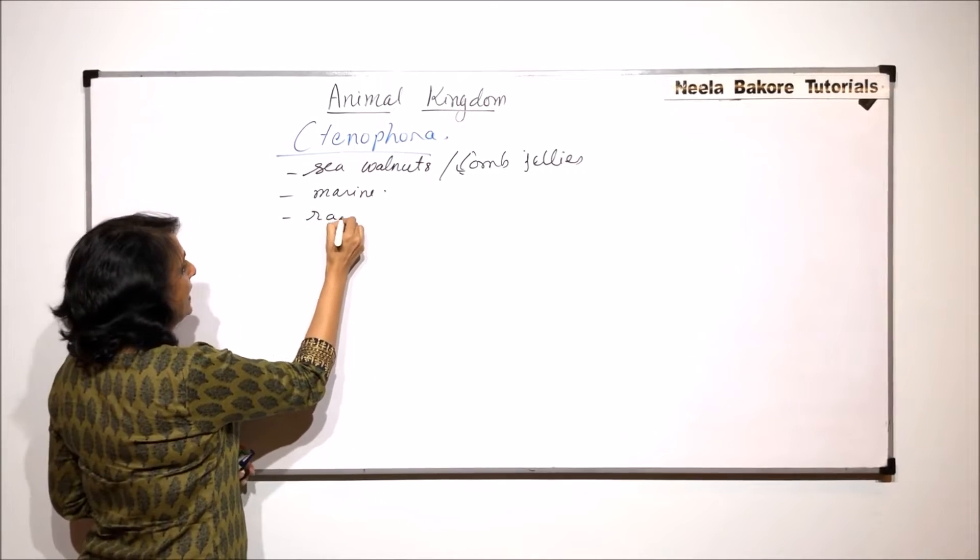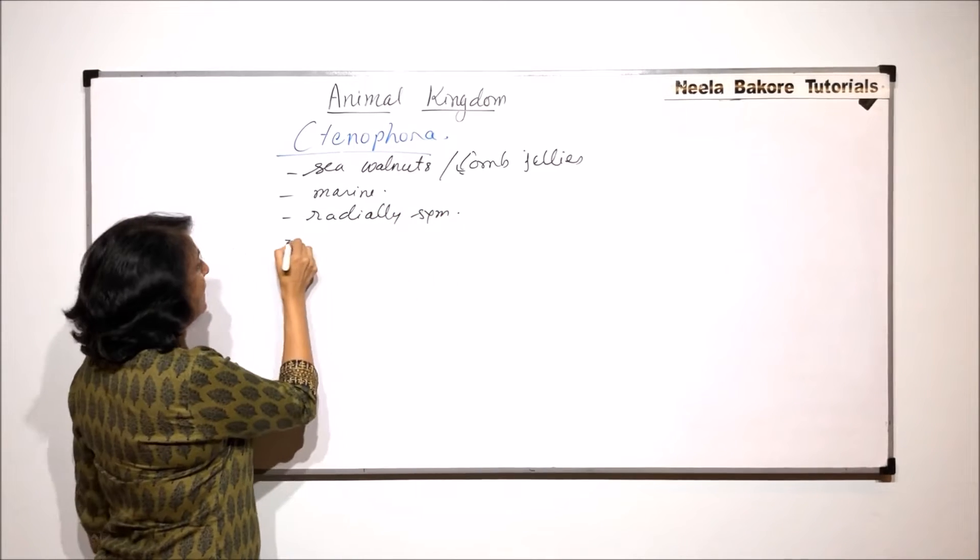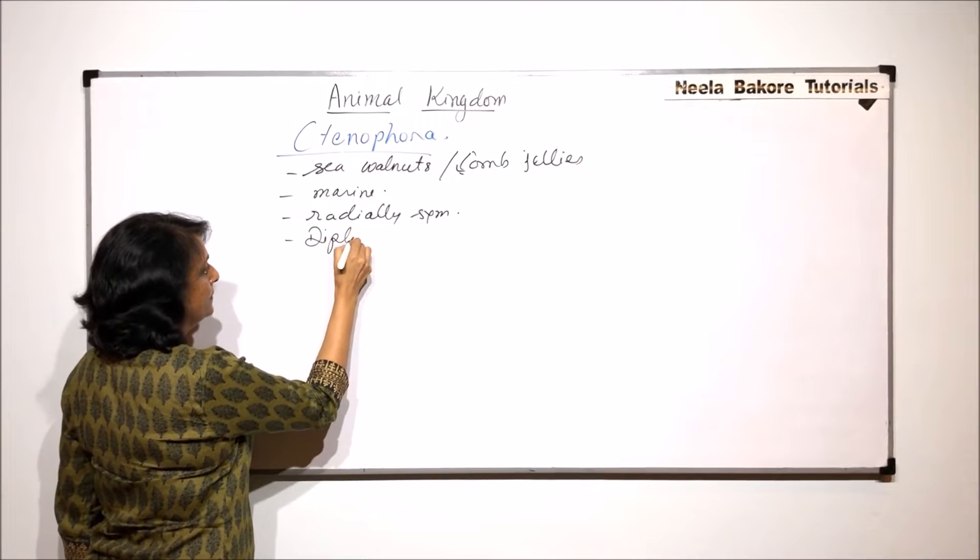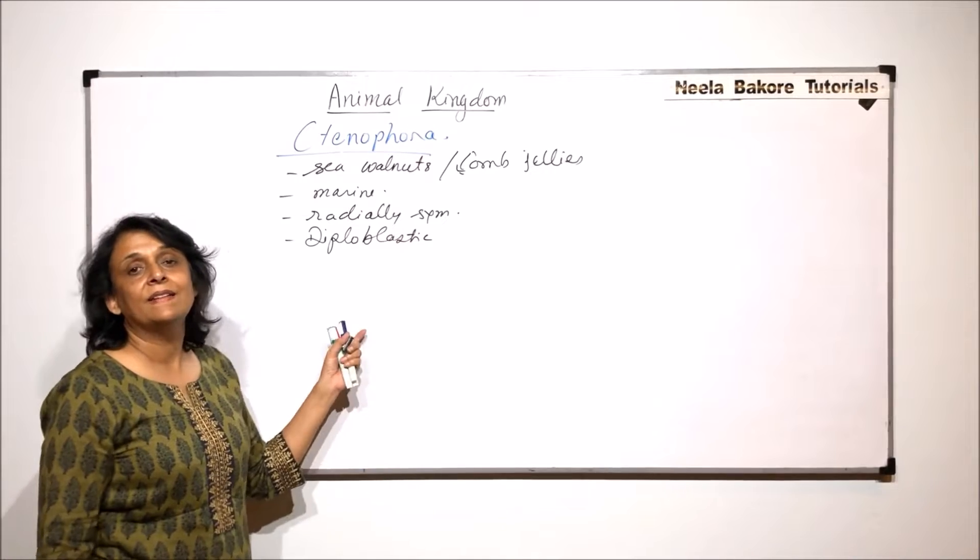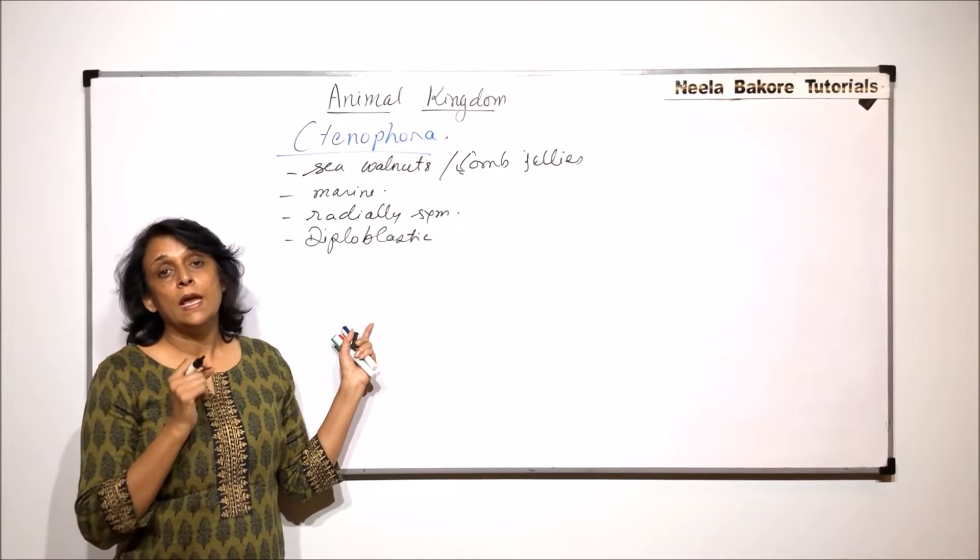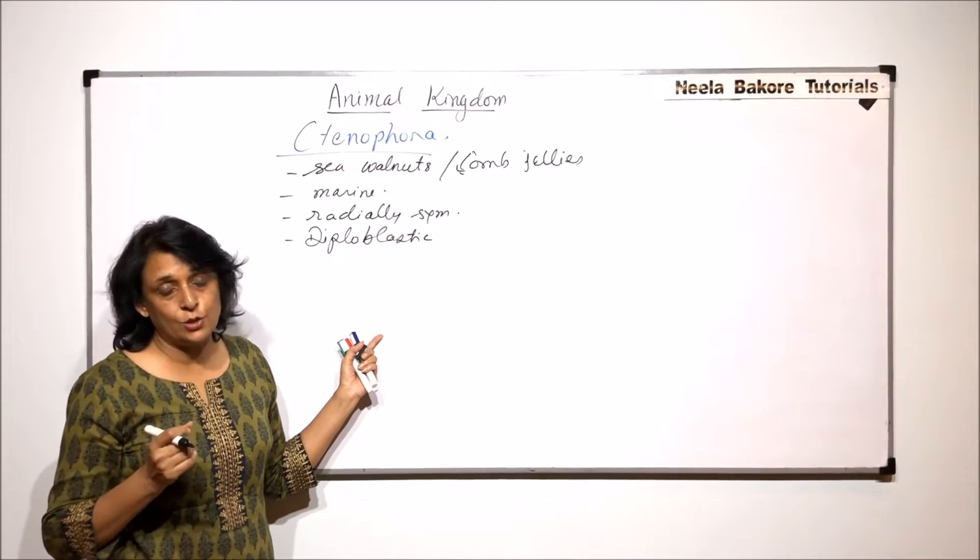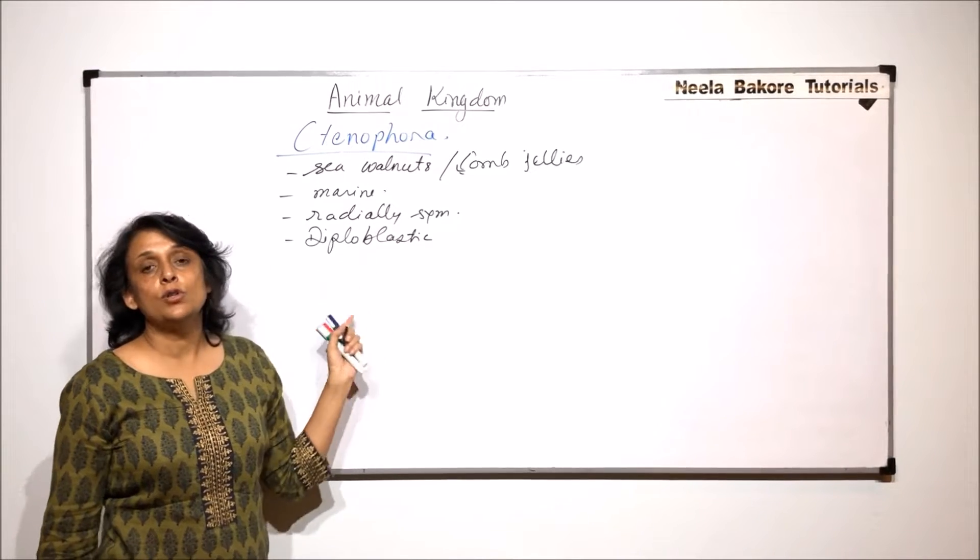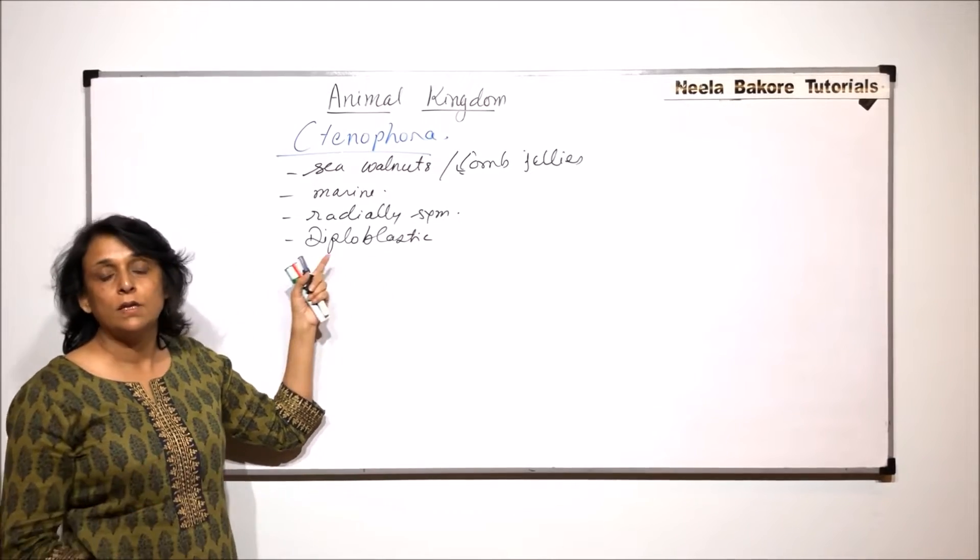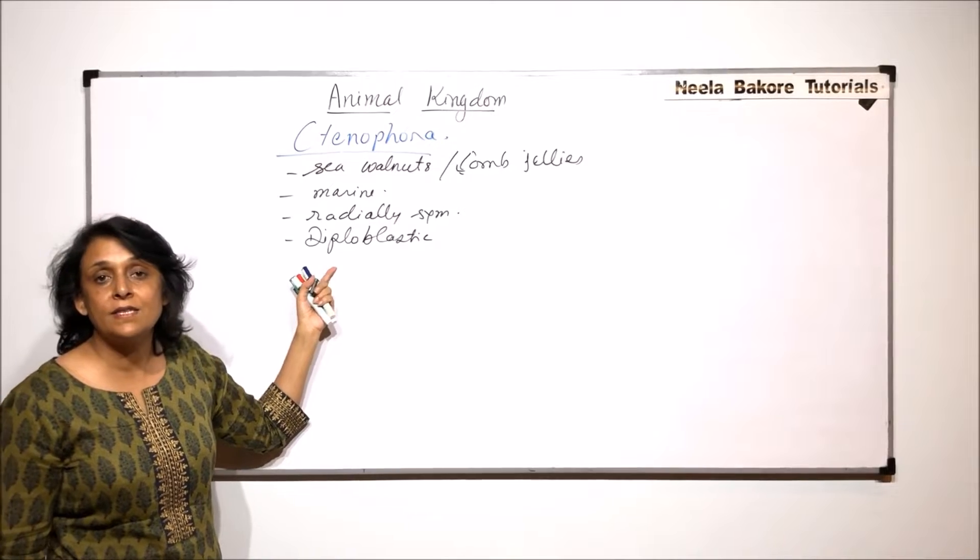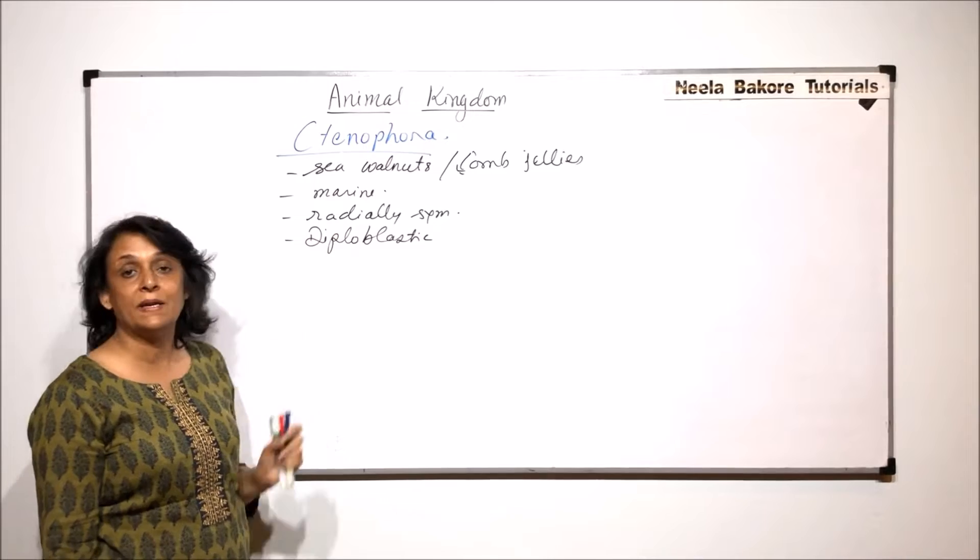They are radially symmetrical or they show radial symmetry. They are diploblastic, but some scientists believe that they are triploblastic because when we come to the actual structure we find that there are some special layers. But most believe these are diploblastic, so we will write the most common perception that scientists have. So diploblastic, radial symmetry.